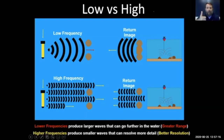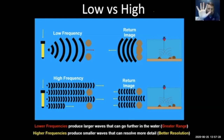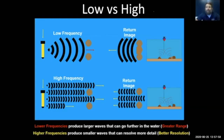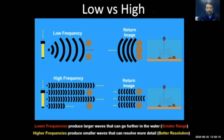The higher the frequency, the smaller the wave, and the more spaces it can fit through. With a really high frequency you'll be able to see fingers; without high frequency you're going to see a mitten — you won't be able to distinguish between two fingers, two rocks, or two tires. You get higher resolution out of higher frequencies because the waves are small enough to fit in the cracks and crevices. But higher frequency doesn't have the energy to travel out and come back at long distances.